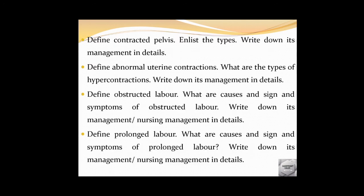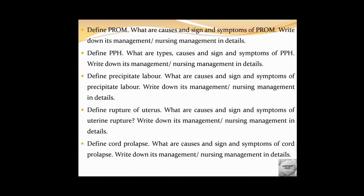Define contracted pelvis — its types and management. Next: abnormal uterine contractions — these can be hyper or hypo contractions. For hyper contractions: what can happen, types, details, and management. Also: obstructed labor — its causes, signs and symptoms, management and nursing management. Prolonged labor is also to be covered similarly.